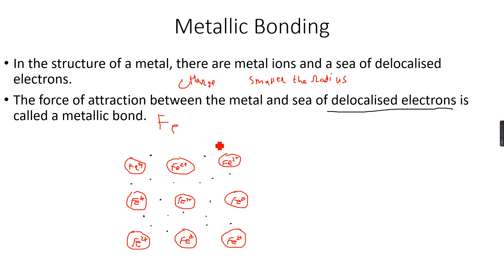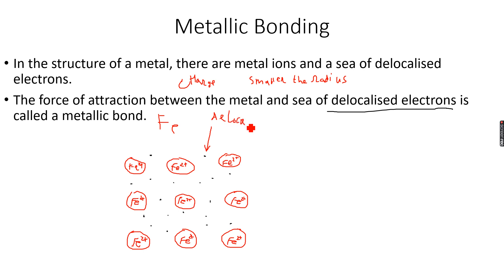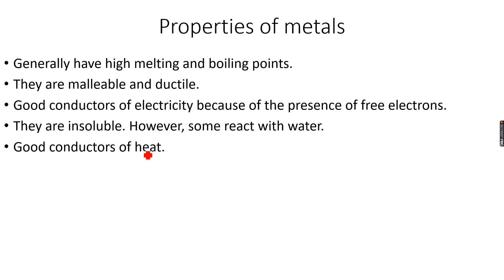This is what a metallic bond structure looks like; you can draw this in your paper. You must label the ions, and you must label the dots — just make an arrow and write 'delocalized electrons' to show that you know what you're doing. Also label the metal ions.